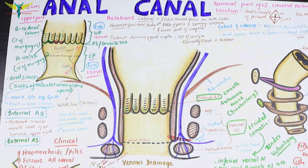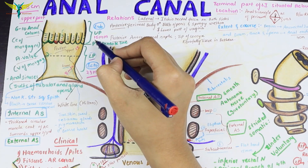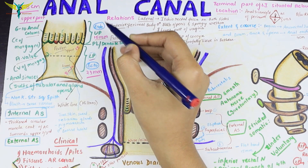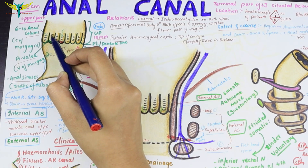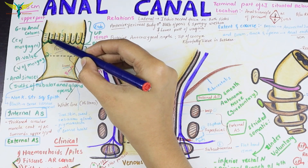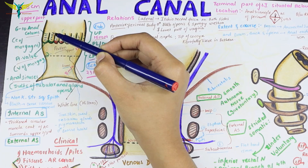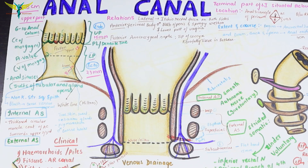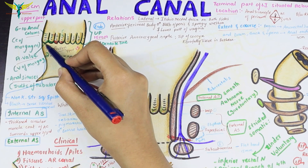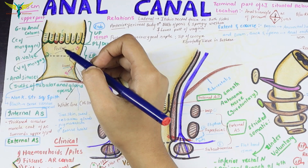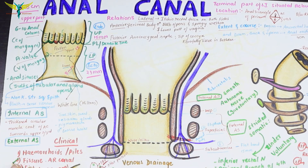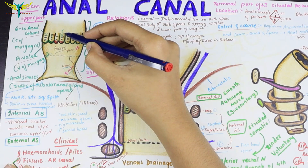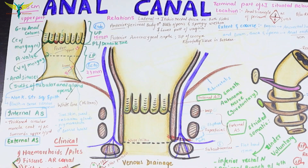The upper part of the anal canal is about 15 mm and is endodermal in origin. It contains 6 to 10 anal columns, also called the columns of Morgagni. Anal valves, also called valves of Morgagni, and anal sinuses are also present. Into the anal sinuses, the ducts of the tubular anal glands open.